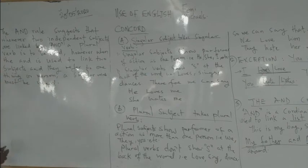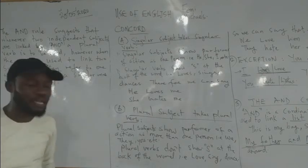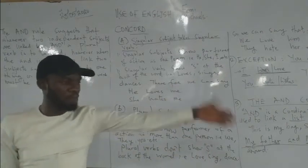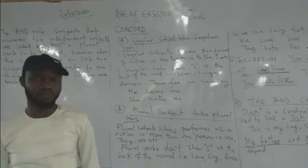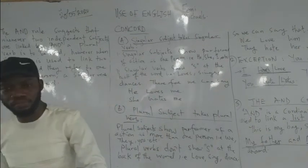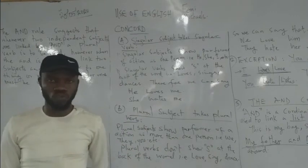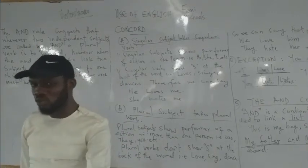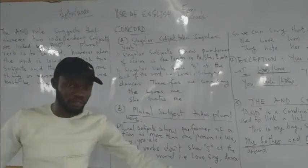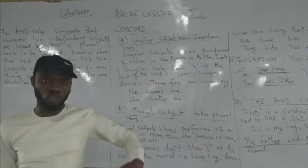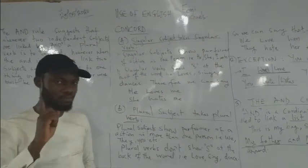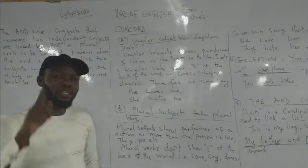There are two sides to this. The first says: when you link two things together and those two things are independent of each other — for instance, 'a boy and a girl', 'the boy and the girl are in the classroom' — you use a plural verb because the boy is different from the girl. They are independent.